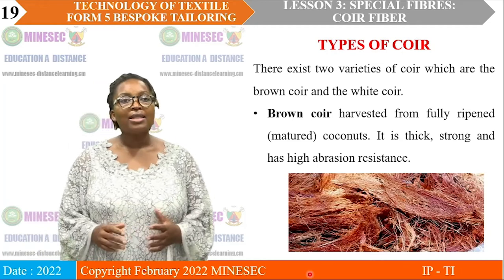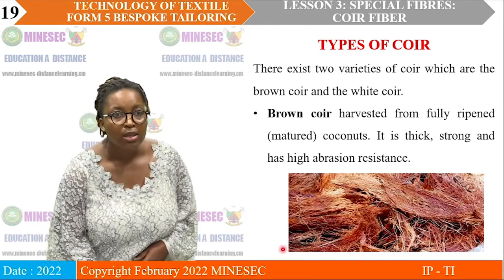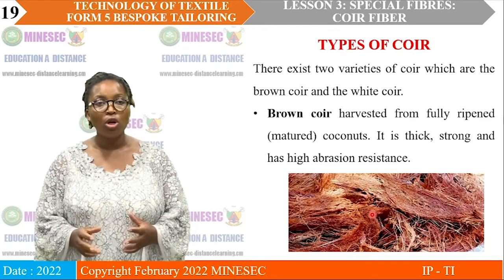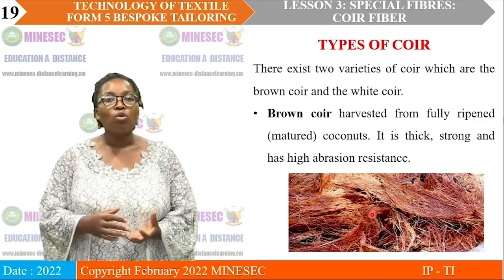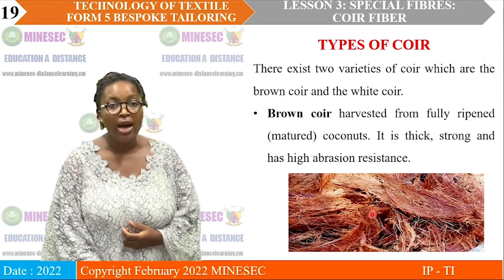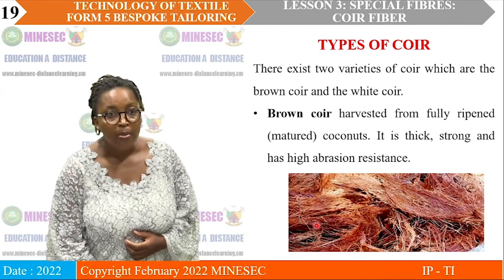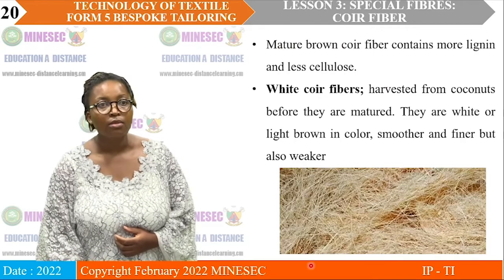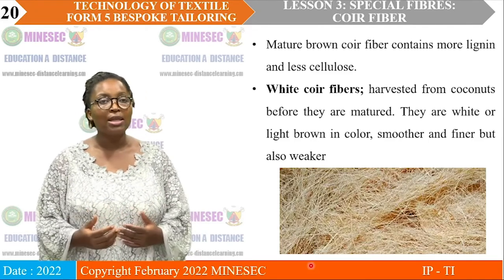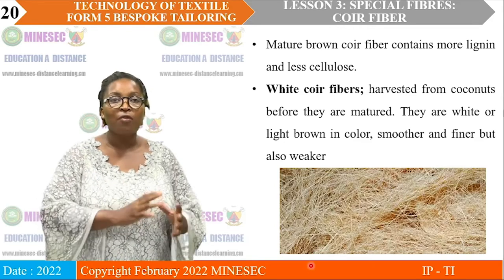Types of Koi: there exist two varieties — the brown Koi and the white Koi. The brown Koi is harvested from fully ripe, mature coconut — when the coconut has matured and you can peel and eat it. Mature brown fiber contains more lignin and less cellulose. As the coconut gets more mature, it becomes more brown because of the greater deposit of lignin.